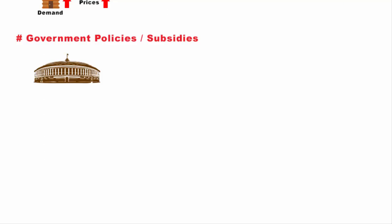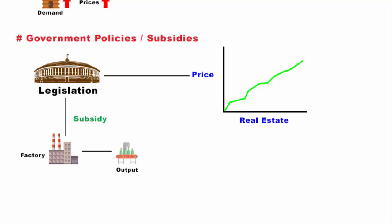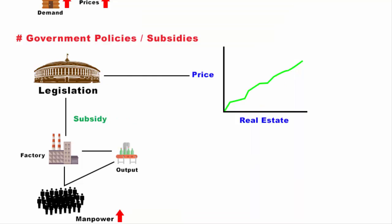The fourth factor is government policies or subsidies. Legislation is an important factor that can impact property demand and prices. Subsidies are basically incentives — the government gives subsidies to big businesses to open their plants and factories at a particular place, creating more output and requiring manpower, which makes people reside nearer to the companies. If you look at the technology hubs in India — places like Bengaluru, Hyderabad, and Gurgaon — people working there tend to live near the MNC companies, which makes property rates shoot up in these areas.